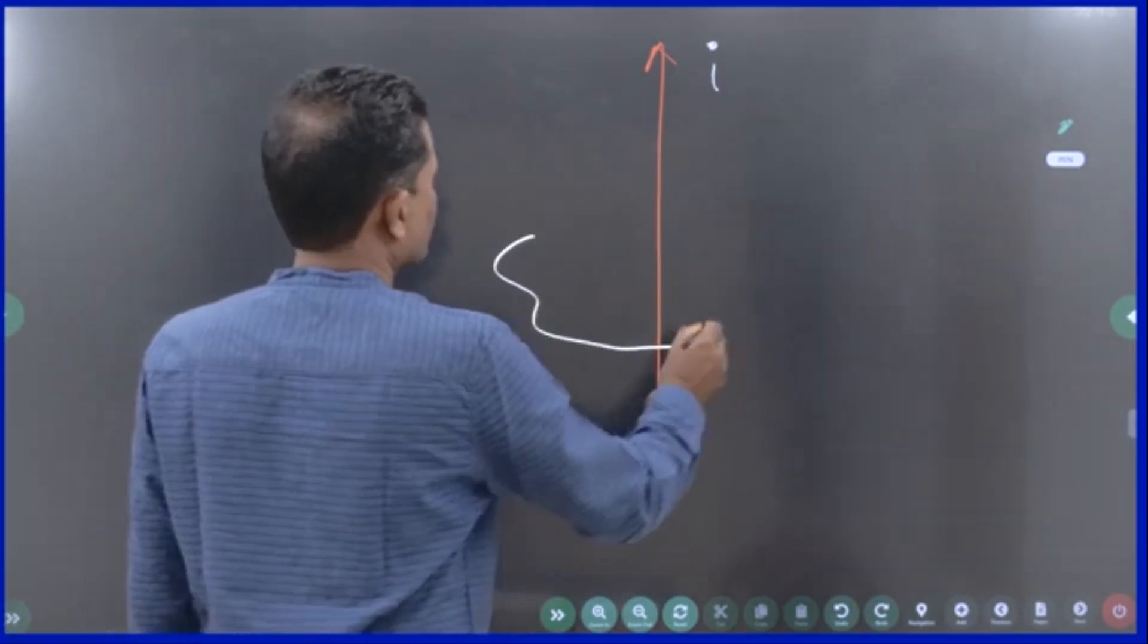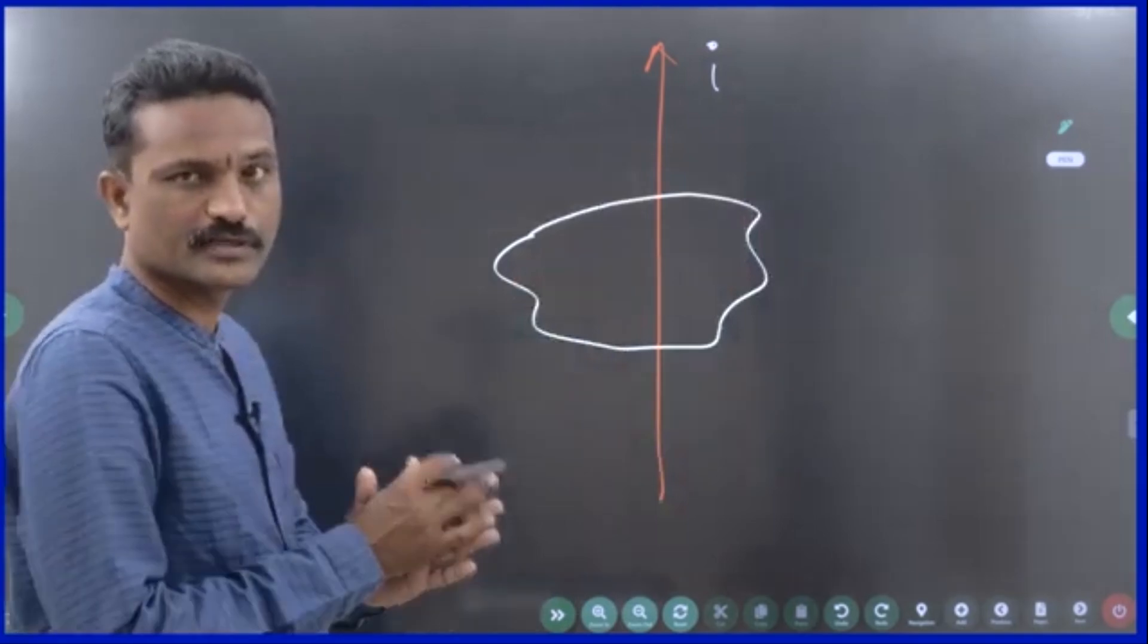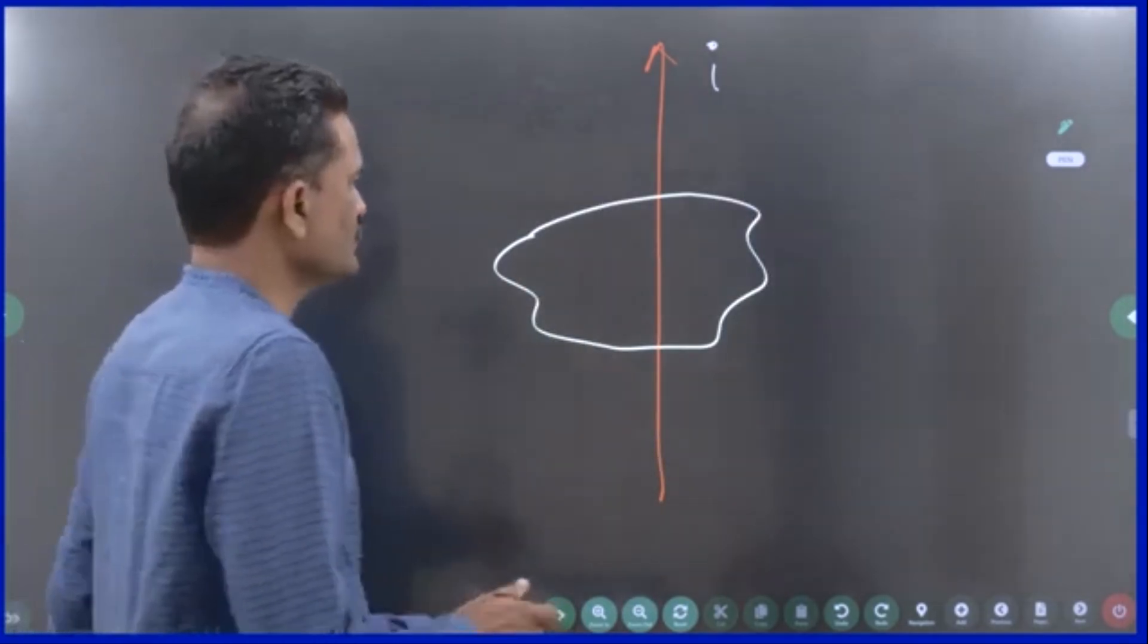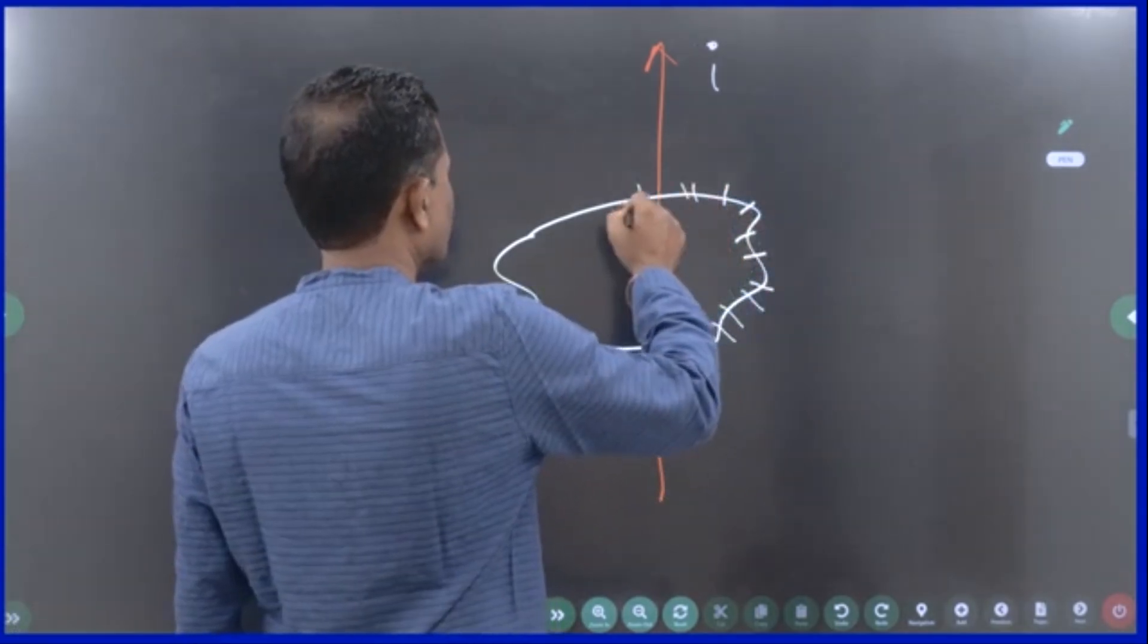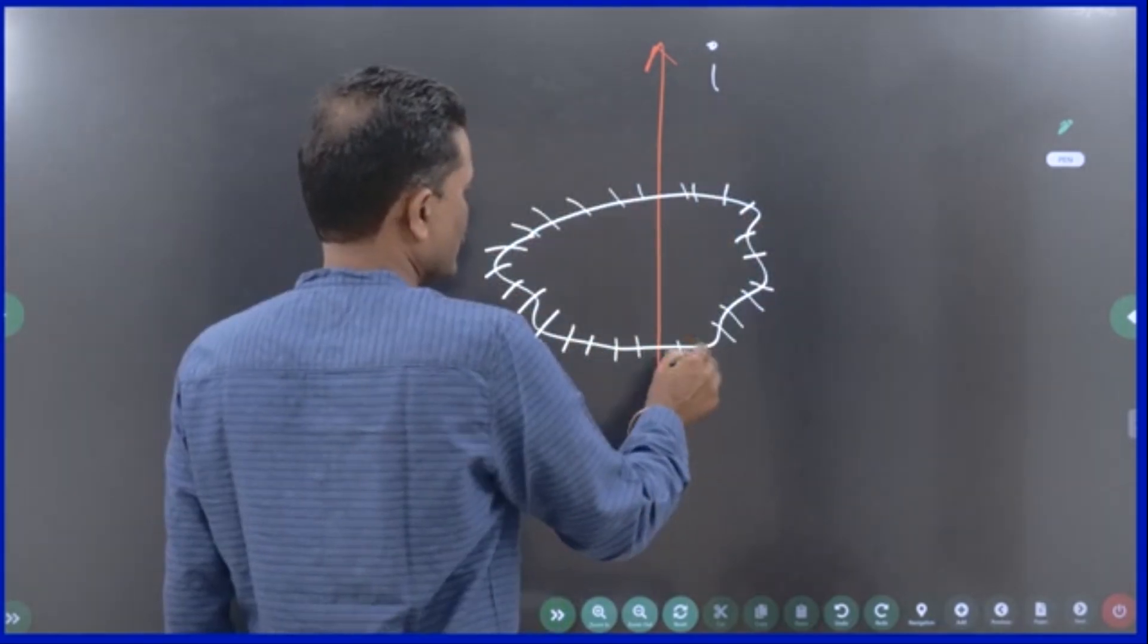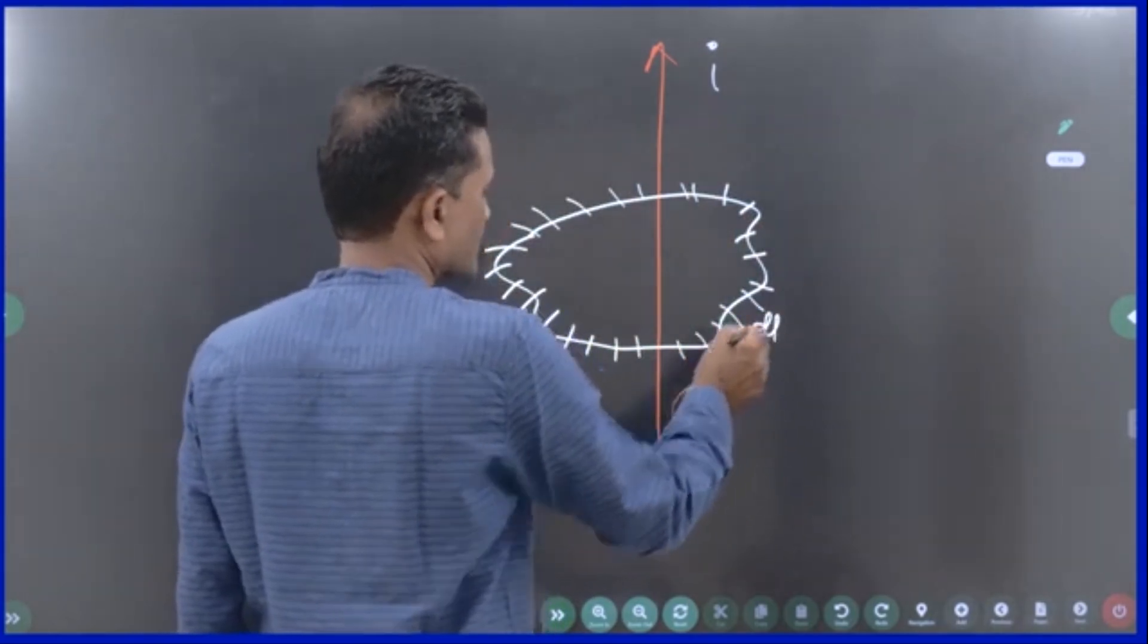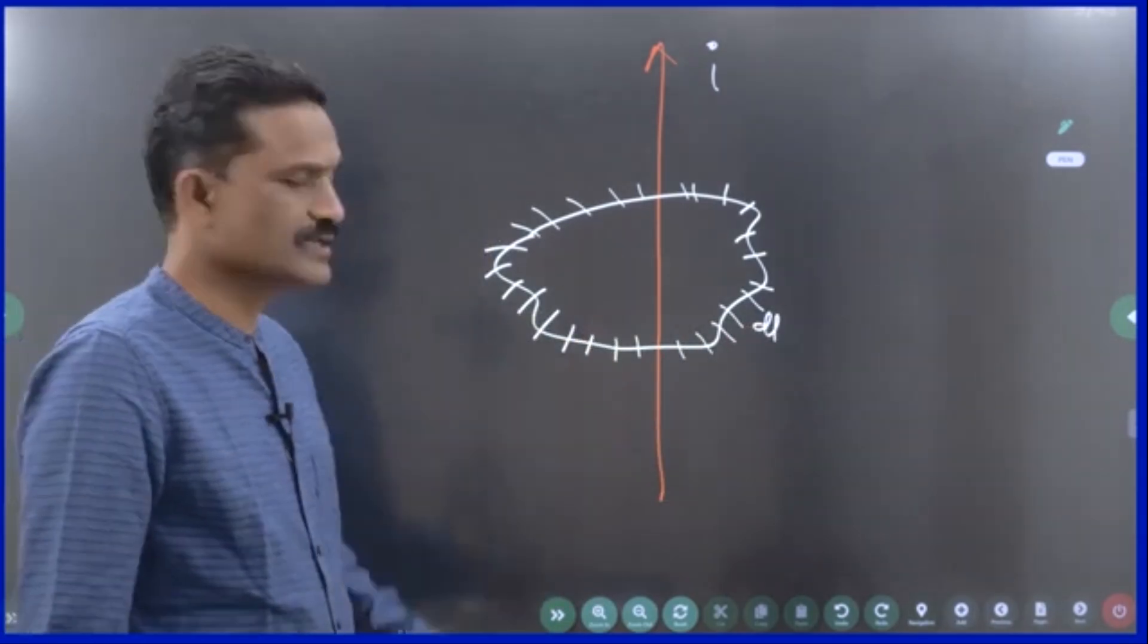Now, what I do? I draw a closed loop of any shape. Closed means it has no starting and ending points. This loop can be divided into many small infinitesimally small parts. Each part is having a length of dl. Length element, small piece of length is dl.